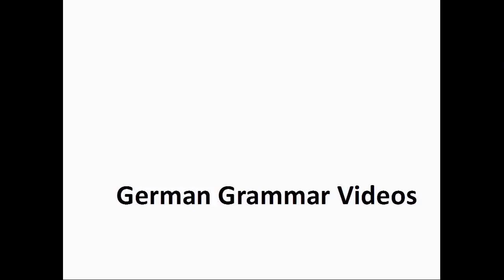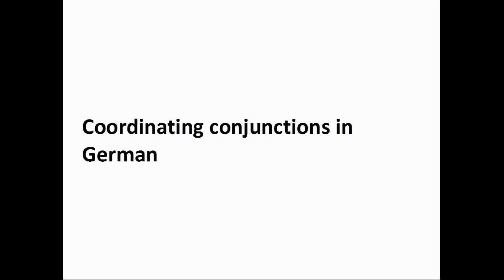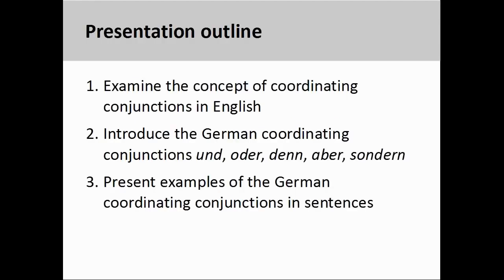Welcome to German Grammar Videos. This presentation will examine how to use coordinating conjunctions in German. The presentation will first examine the use of coordinating conjunctions in English, focusing on how coordinating conjunctions are used to create compound structures and to join sentences together. Then the video will move over to an examination of the German coordinating conjunctions und, oder, denn, aber, and sondern, before concluding with examples of how these conjunctions are used in sentences. Let's get started.